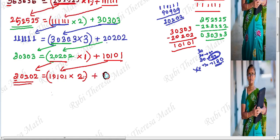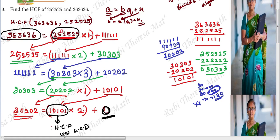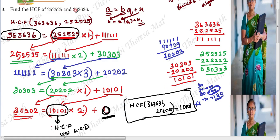There will be no remainder—the remainder is zero. So in the step where the remainder becomes zero, the divisor is the HCF. The divisor in the step where the remainder becomes zero is the highest common factor. So the HCF of 363,636 and 252,525 is 10,101.